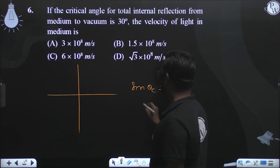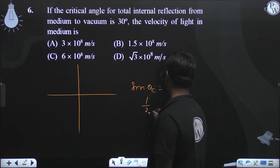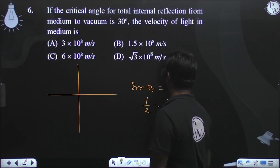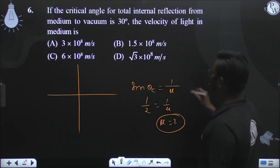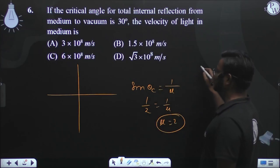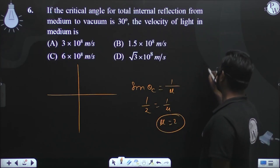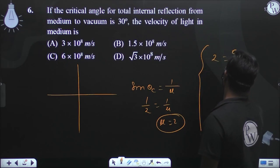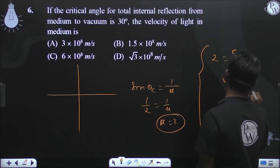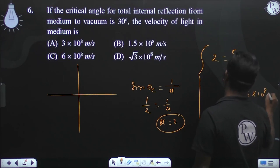Sine theta c = sine 30 = 1/2. So mu (μ) = 2. The velocity of light in medium: μ = C/V, so V = C/2, which gives 1.5 × 10⁸ meter per second.